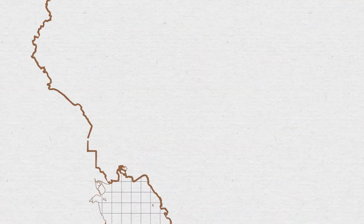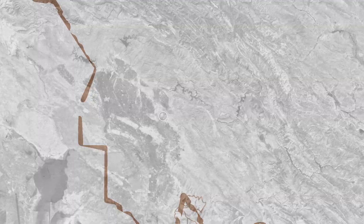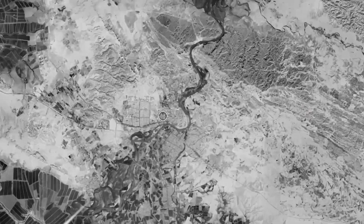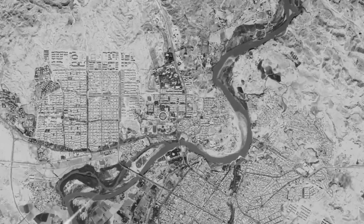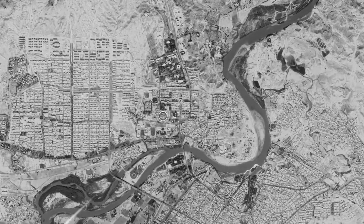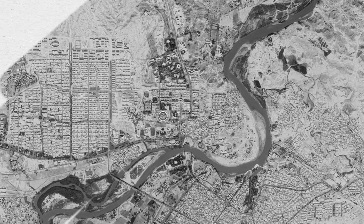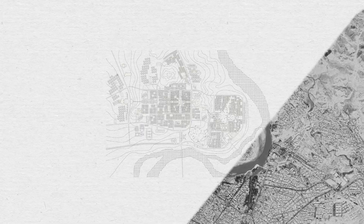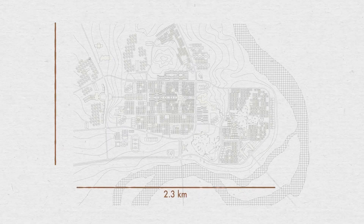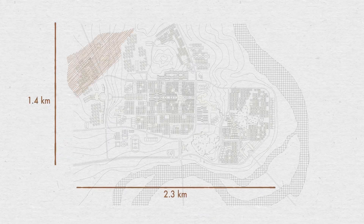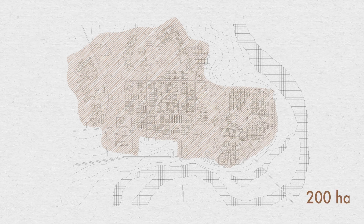Located just across the Karun River, about two kilometers from the ancient city of Shushtar in the southwest of Iran, the site for Shushtar New Town measures approximately 2.3 by 1.4 kilometers, or nearly 200 hectares.